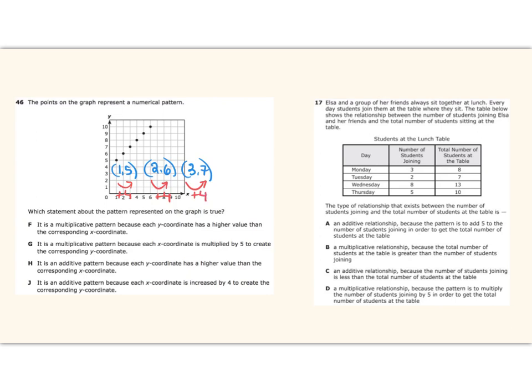So this is an additive relationship. If I increase x by four I get y, and that's the last answer choice here. The x-coordinate is increased by four to create the corresponding y-coordinate. So this is how analyzing numeric patterns on a graph looks in fifth grade.